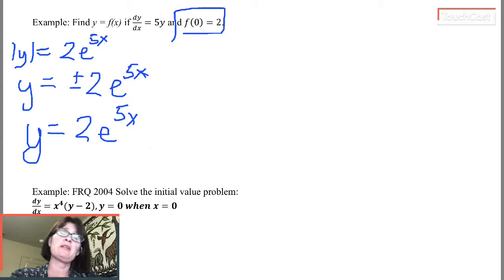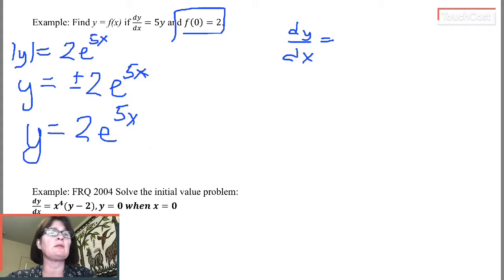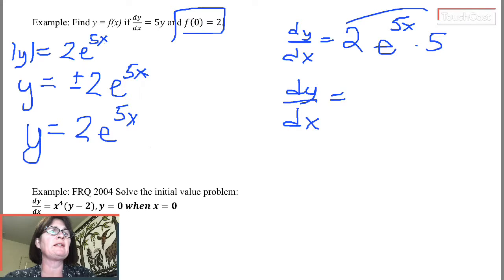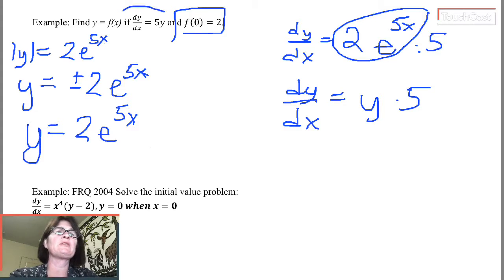Once I decide on my y, I'm going to find dy/dx. So dy/dx is going to equal this 2, which is a multiplier, and then e to the 5x times the derivative of the exponent is 5. So notice that that's going to be, if y is 2e to the 5x, dy/dx equals 2e to the 5x is y times 5, which was my original differential equation. So that must be the correct solution. Thank you.